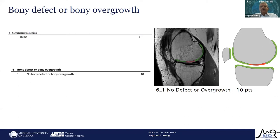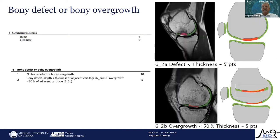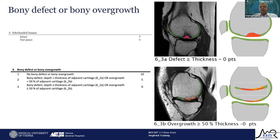The next variable is bony defect or bony overgrowth. For the first time we introduced bony overgrowth, as with long-term follow-up after cartilage repair surgery, bony overgrowth is increasingly seen. No bony defect or overgrowth scores the maximum 10 points. A bony defect less than the thickness of adjacent cartilage, or bony overgrowth less than 50% of adjacent cartilage thickness, scores 5 points. A bony defect exceeding adjacent cartilage thickness, or overgrowth more than 50% of adjacent cartilage, scores zero.